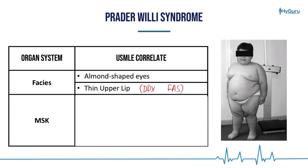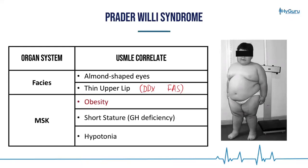Remember, in fetal alcohol syndrome they have a smooth philtrum as well as a thin upper lip. In Prader-Willi syndrome, however, these patients are going to be very obese.